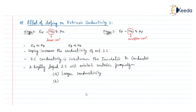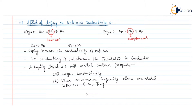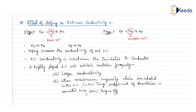The second metallic property that can be seen is that when minimum impurity atoms are added in the semiconductor, the negative temperature coefficient of resistance is converted into a positive temperature coefficient of resistance.